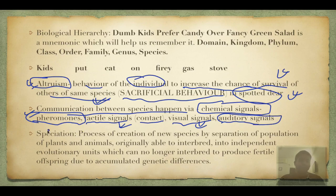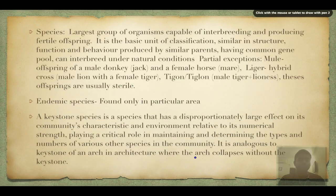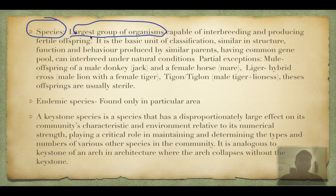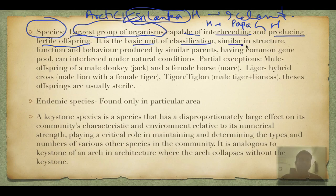Speciation is the process of creation of new species. It occurs by separation of populations of plants and animals until they are no longer able to interbreed. Kept separate long enough, their gametes will not fuse, fertilization will not occur, they develop into independent evolutionary units and cannot produce fertile offspring due to genetic differences. A species is the largest group of organisms capable of interbreeding and producing fertile offspring — all humans worldwide are a single species, Homo sapiens.